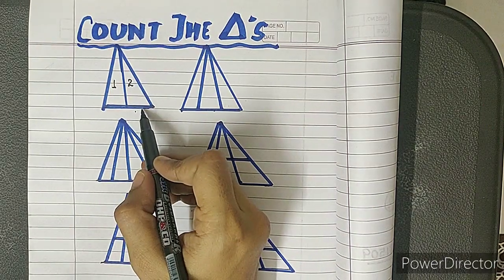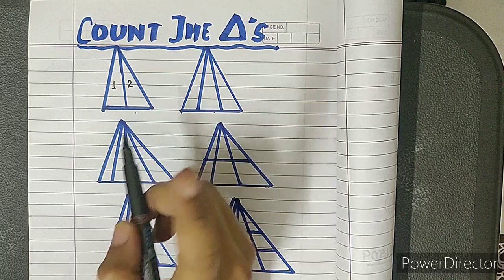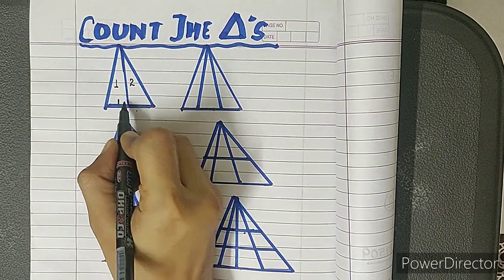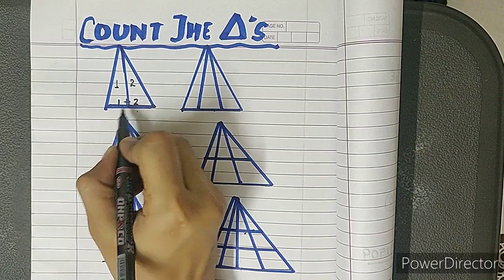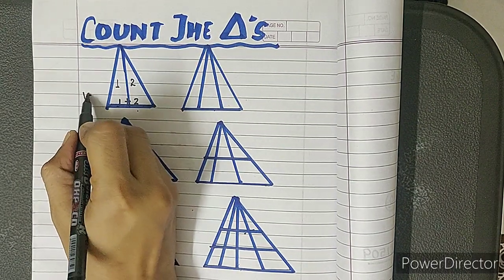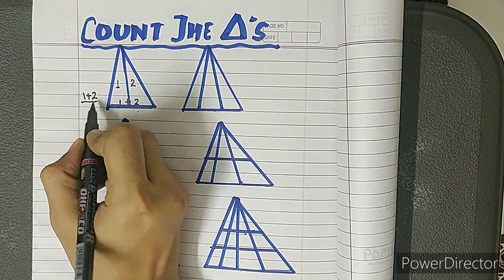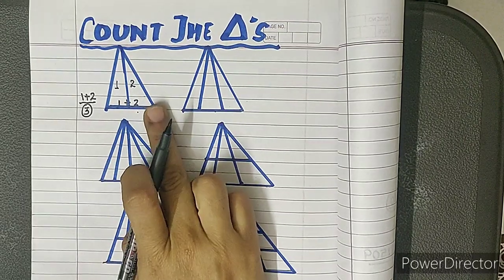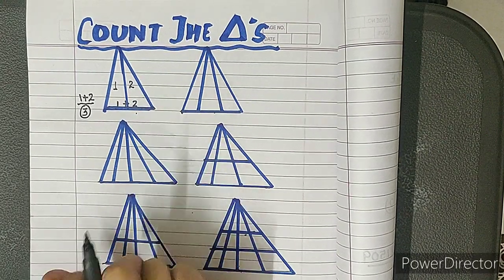Let's start with base number one. When you see one base, you write here one plus two - the first base and second base. So your total is one plus two equals three. This means the total number of triangles is three.